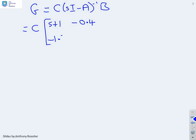So G equals C into SI minus A inverse into B. So you remember from series 1, this is how we find the associated transfer function. So let's put in the numbers. So we get C into S plus 1 and then minus 0.4 and then minus 1.2 and then S plus 1.2. And that's all inverse into B.